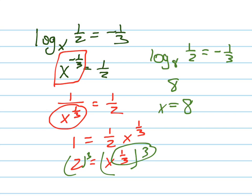Ask yourself: does eight to the negative one-third equal one-half? Is that true? Isn't it basically one over eight to the power of one-third equals one over two?